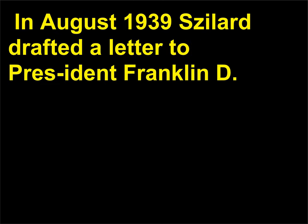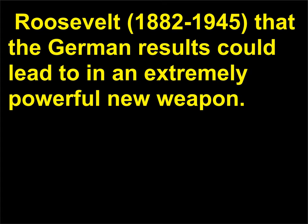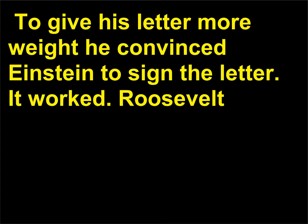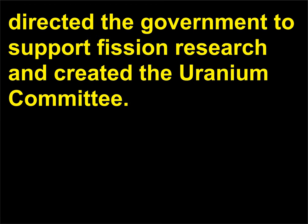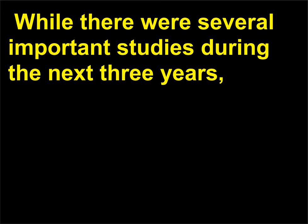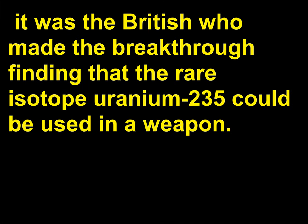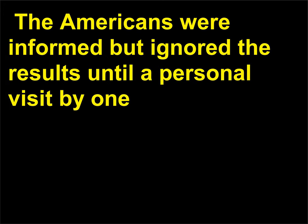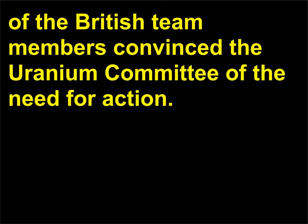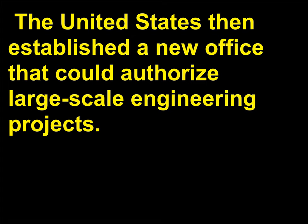In August 1939, Szilard drafted a letter to President Franklin D. Roosevelt (1882–1945) warning that the German results could lead to an extremely powerful new weapon. To give his letter more weight he convinced Einstein to sign the letter. It worked — Roosevelt directed the government to support fission research and created the Uranium Committee. While there were several important studies during the next three years, it was the British who made the breakthrough finding that the rare isotope uranium-235 could be used in a weapon. The Americans were informed but ignored the results until a personal visit by one of the British team members convinced the Uranium Committee of the need for action.